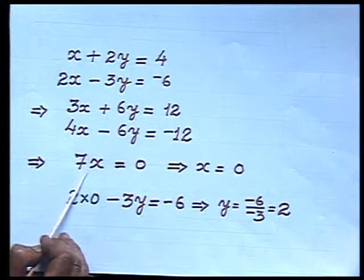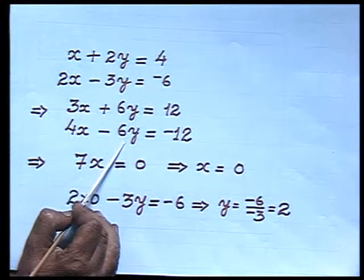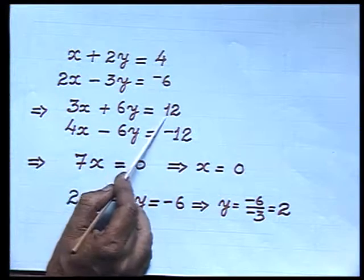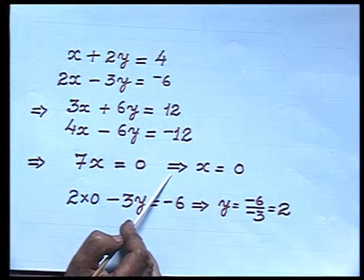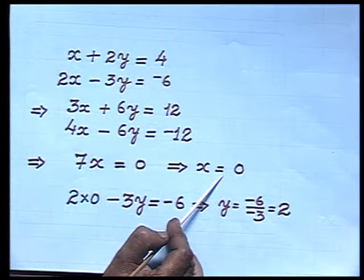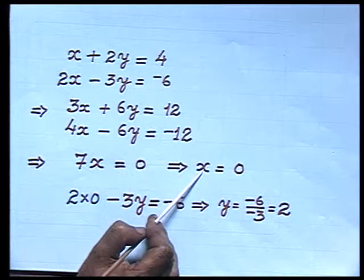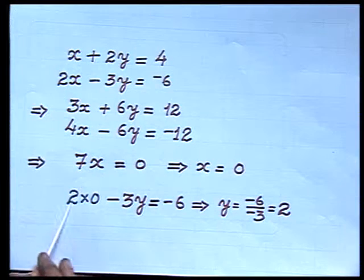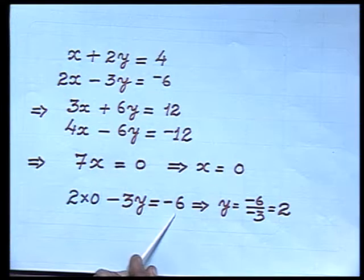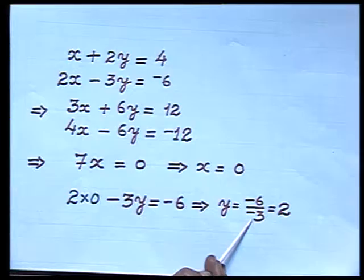Adding the two equations: 3x plus 4x gives 7x, and 6y plus (−6y) gives 0, and 12 plus (−12) gives 0. So 7x equals 0, giving x equals 0. Substituting x equals 0 into the second equation: 2(0) minus 3y equals minus 6, giving y equals minus 6 divided by minus 3, which equals 2. So x equals 0 and y equals 2, obtained by making the coefficients of y equal.